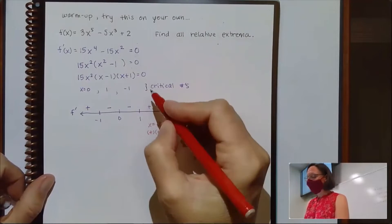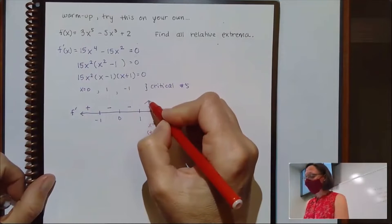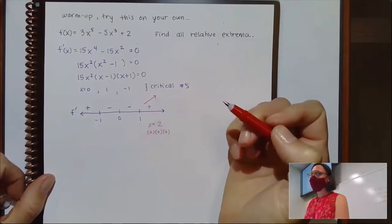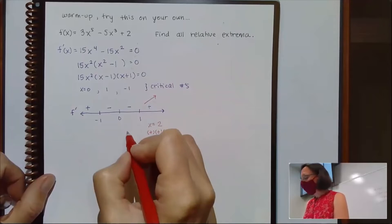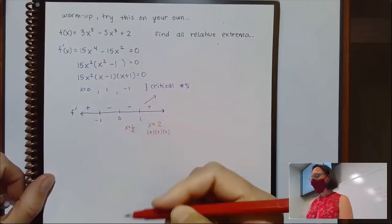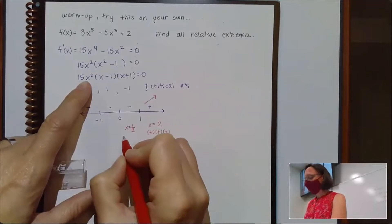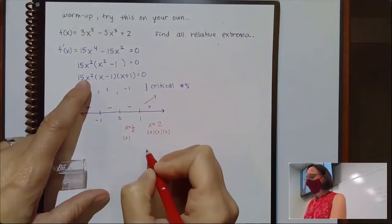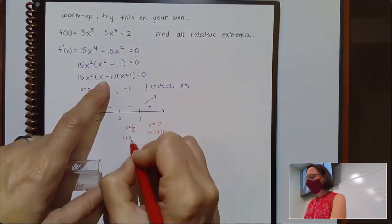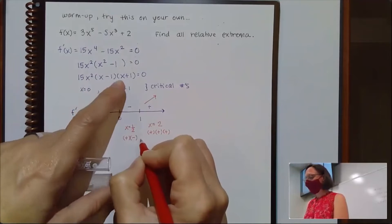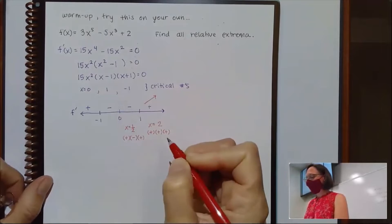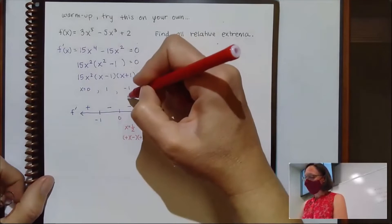Which means that over here, I know that my graph is going up. If I picked a test point in here between 0 and 1, it doesn't really matter if you prefer fractions or decimals. When I plug in the 1/2, when I square it, it's positive. 1/2 - 1 is going to be negative. And 1/2 + 1 would be positive. So overall, that's my negative number.